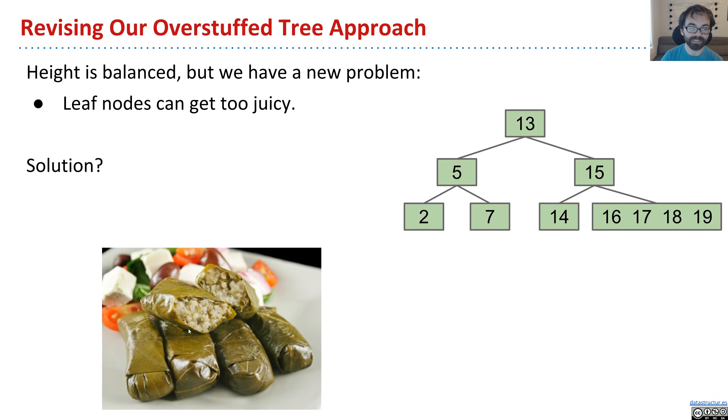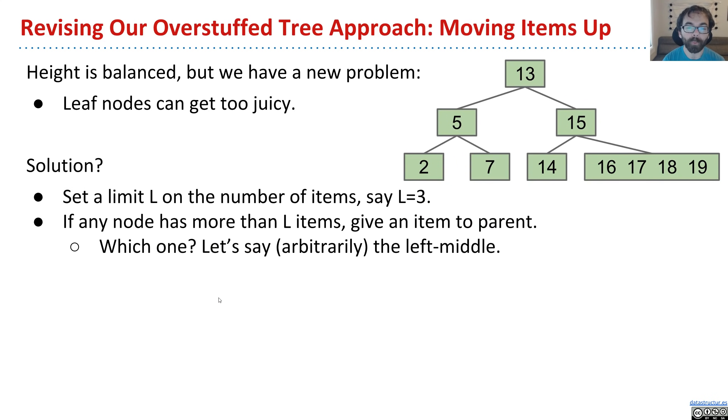We're not going to let this thing get so full that it just explodes. We're going to set a limit, like say L equals 3. So if any node has more than L items, then we're going to pass an item up to the parent. Which one are we going to pass? Let's say this node is too full. Why is it too full? Because we said L equals 3.